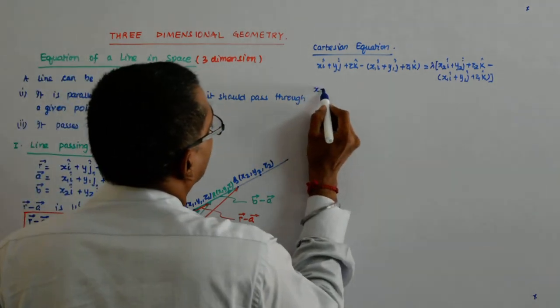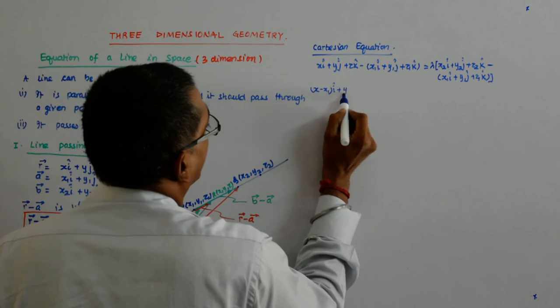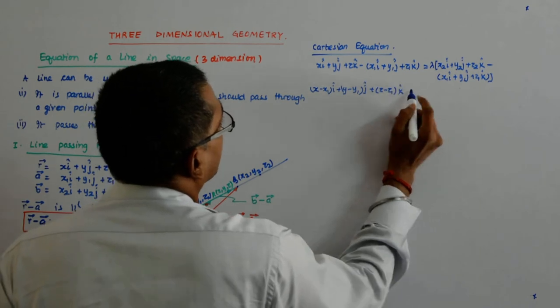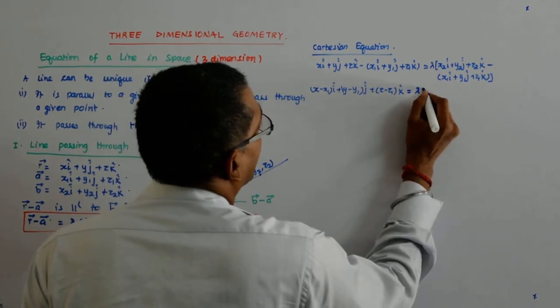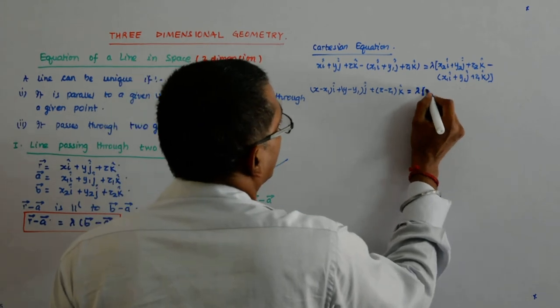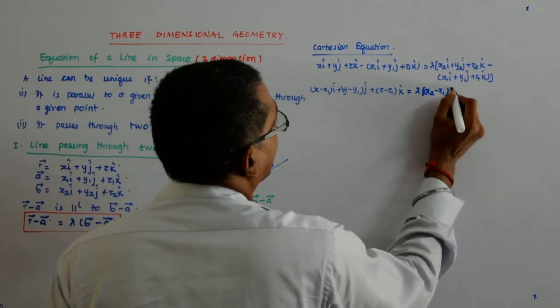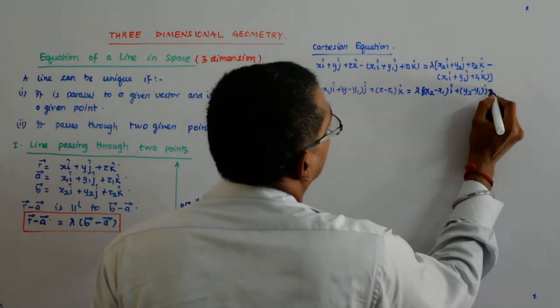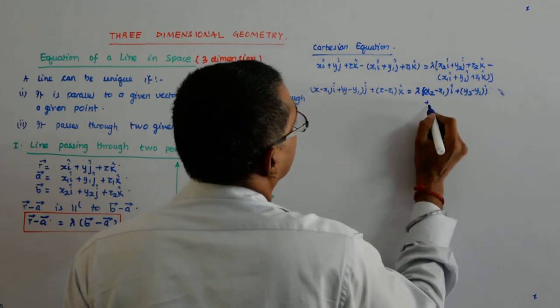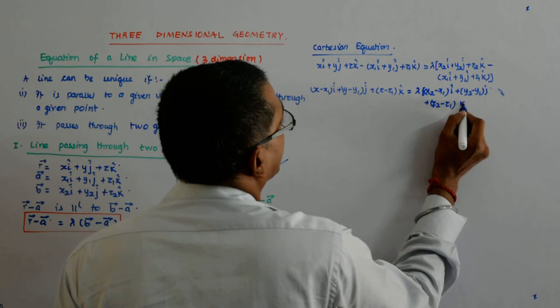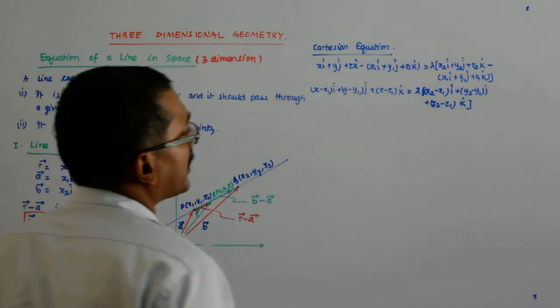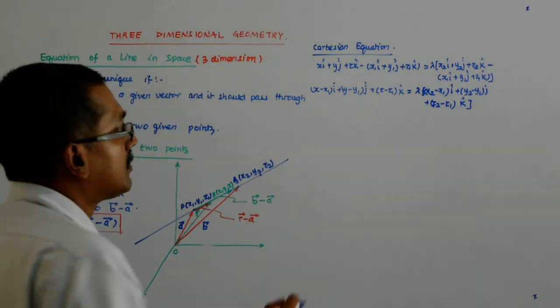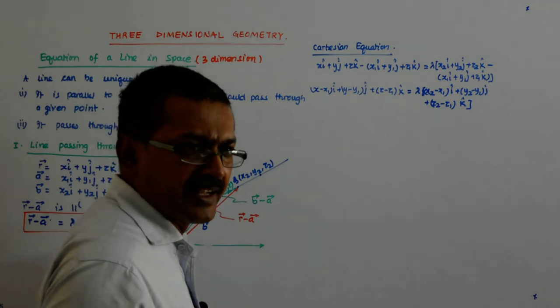Now, this gives me X minus X1 i cap plus y minus y1 j cap plus z minus z1 k cap is equal to lambda times, lambda times x2 minus x1 i cap plus y2 minus y1 j cap plus z2 minus z1 k cap. We get that point? So, equating, if these two vectors are equal, I have to equate the coefficients of i j and k.